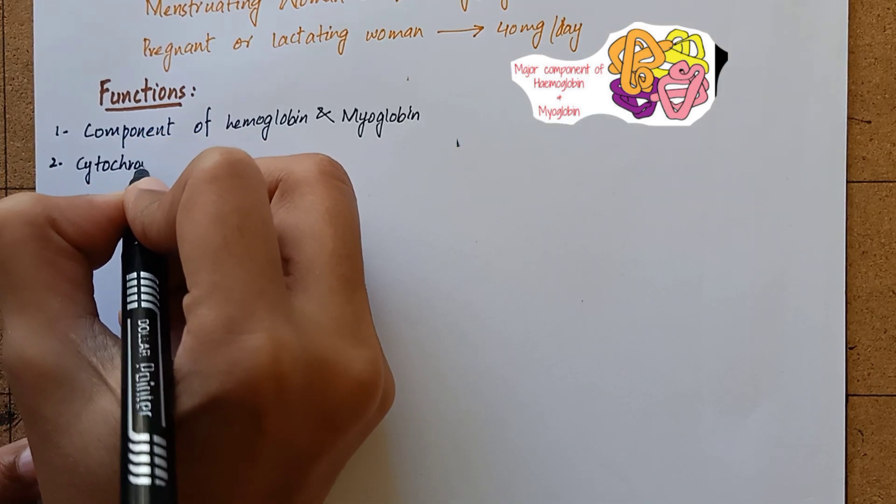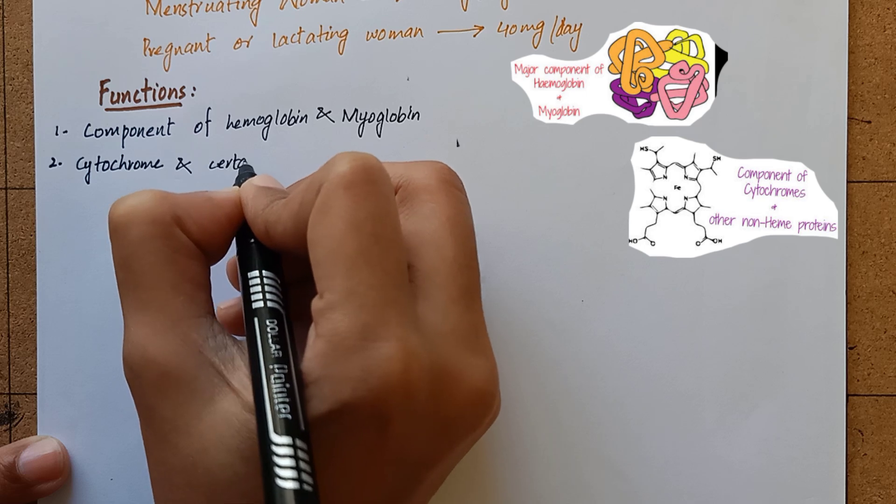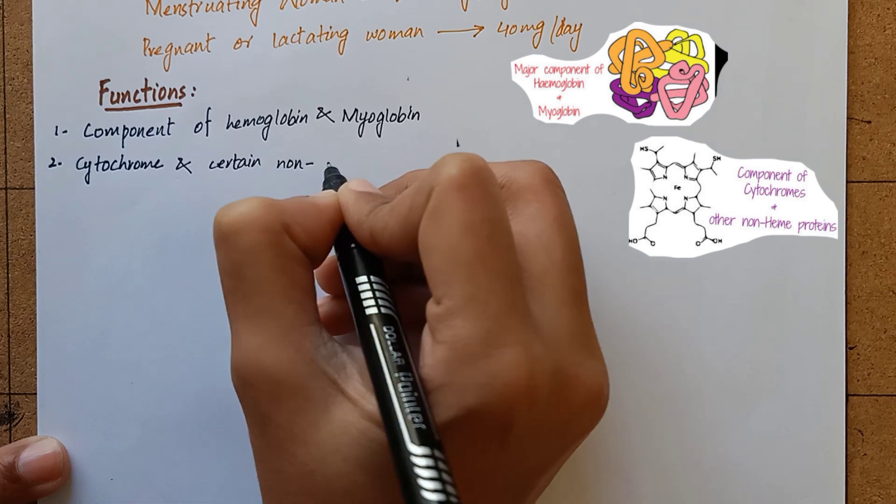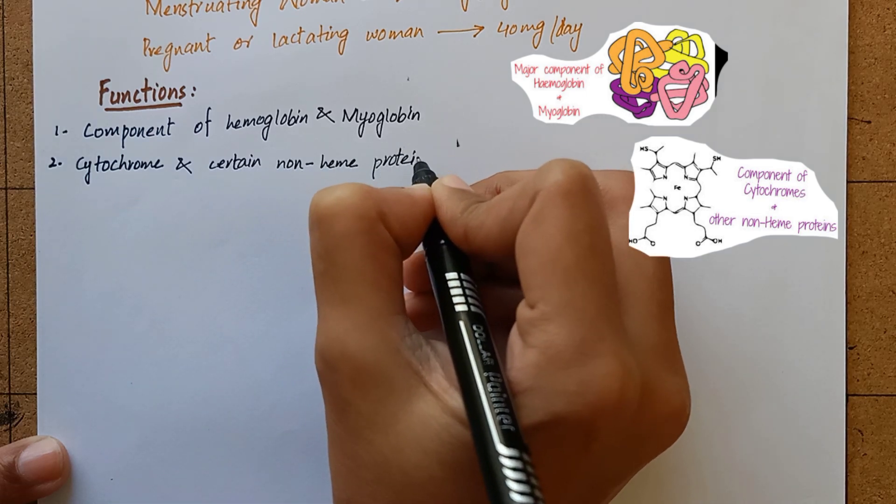Iron is also a component of cytochromes and certain known heme proteins which are necessary for electron transport chain and oxidative phosphorylation.